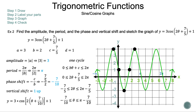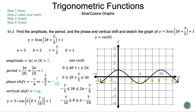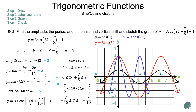Now let's check. First let's change our graph to y = cosine(θ). Now let's graph y = 3 cosine(θ) — the amplitude increased, so we have a vertical stretch, but the period remained the same. Now let's graph y = 3 cosine(2θ) — this time the amplitude stayed the same but our period shrunk, so we have a horizontal shrink.